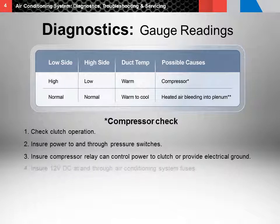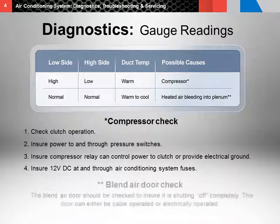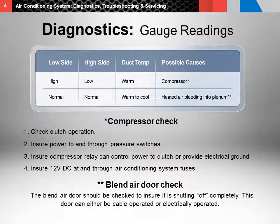And (4) ensure 12-volt DC at and through air conditioning system fuses. Finally, if both gauge readings appear normal with a warm to cool duct temperature, there could be heated air bleeding into the plenum. In this case, you should check the blend air door to ensure it is shutting off completely. This door can either be cable operated or electrically operated.